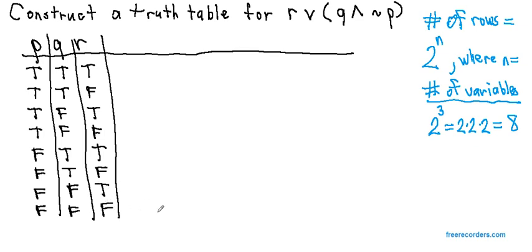Now the number of columns is determined by the number of variables plus the number of connectives. In this problem, we have three connectives. We have an OR, an AND, and a NOT.